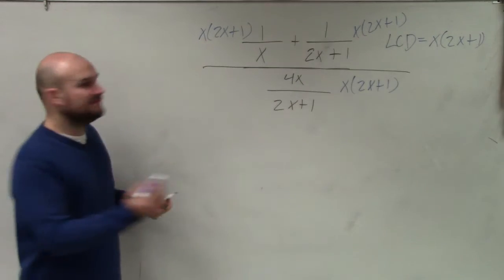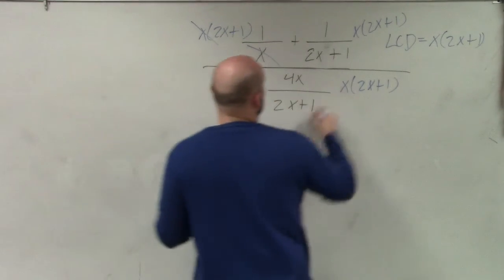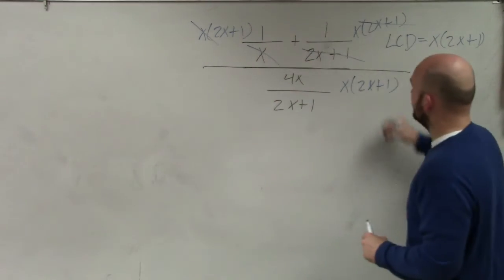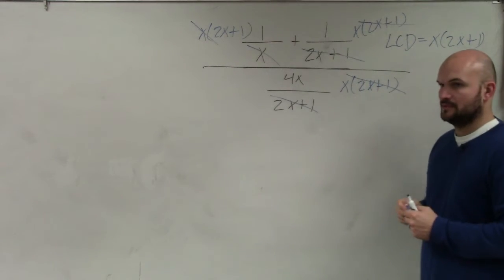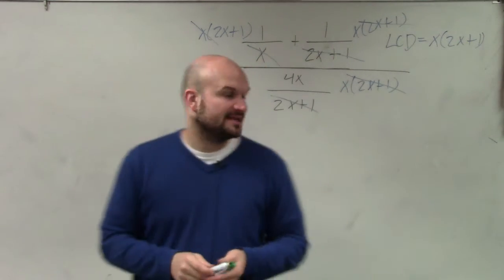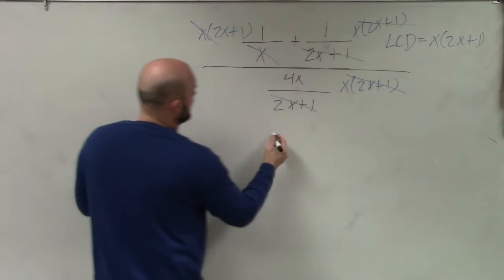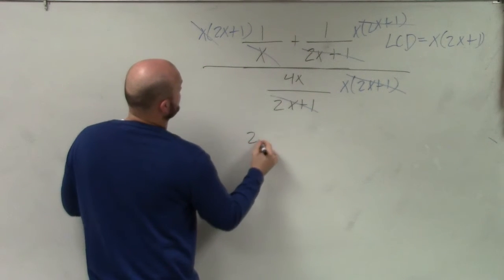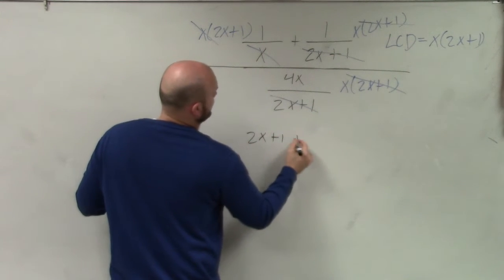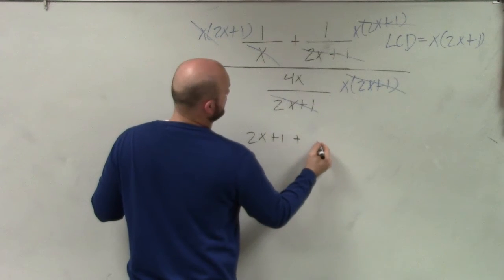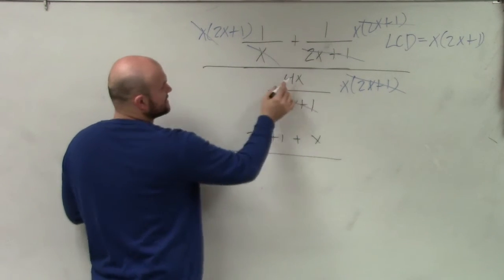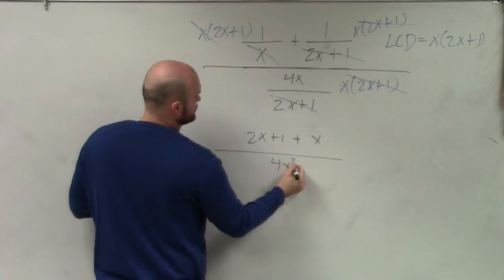Now, we apply your division property. The x's divide out, the 2x plus 1's divide out, the 2x plus 1's divide out. So now, by simplifying this, I now have, in my numerator, 2x plus 1 plus x divided by x times 4x is 4x squared.